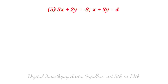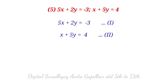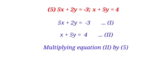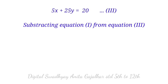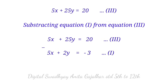Next problem: 5x plus 2y equal to minus 3 (equation first), x plus 5y equal to 4 (equation second). The coefficient of x in equation first is 5, so we multiply equation second by 5: 5x plus 25y equal to 20 (third equation). Subtracting equation first from equation third.